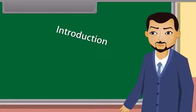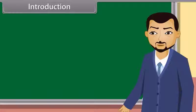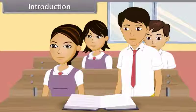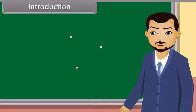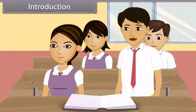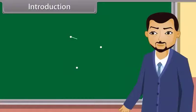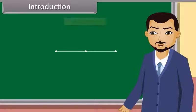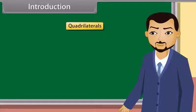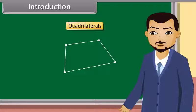Introduction: students, can you tell what we get when we join two points? A line. Yes, we get a line when we join two points. And what do we get when we join three points? A triangle. Yes, we get a triangle. We also get collinear points. Today we'll study about quadrilaterals. A quadrilateral is formed when we join four points.